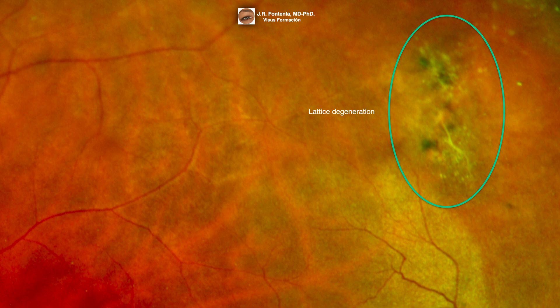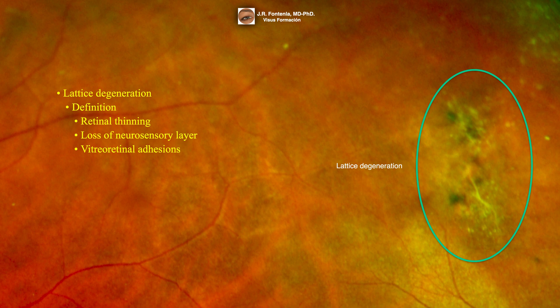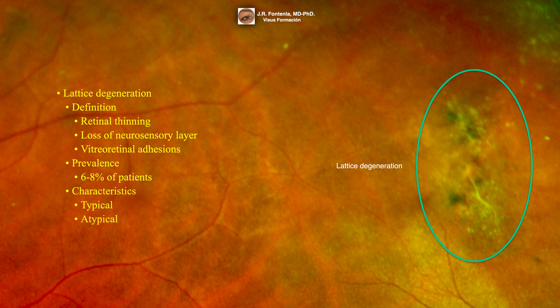Here we can see a lattice degeneration. Lattice degeneration is a retinal thinning with loss of neurosensory layer and vitreo-retinal adhesion at the margin of the lesion. It is found in 6-8% of patients. It features fibrosis and vitreous liquefaction over the lesion.